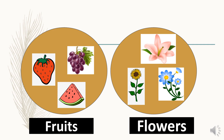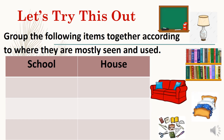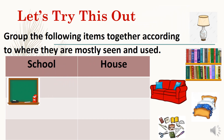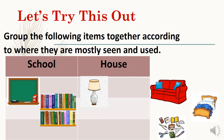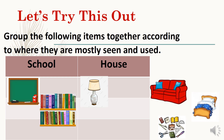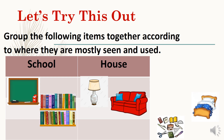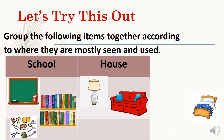I have here a sample classifying chart. We are going to group the following items according to where they are mostly seen and used. On the first table we have the school, and on the second table the house. We have six items to classify: a blackboard, a lampshade, a bookshelf, a sofa, a bed, and school materials. A blackboard goes at school. The lampshade goes in the house. Bookshelves are in the library at school. A sofa goes in the house. School materials we definitely use at school.